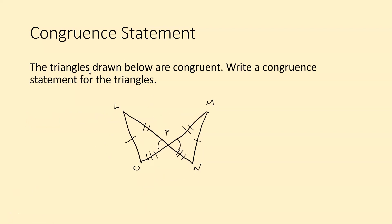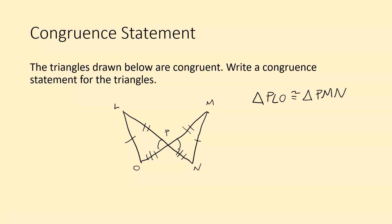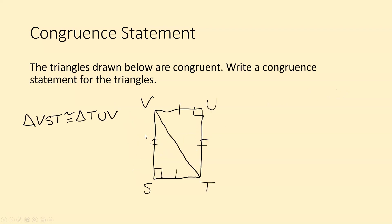Here we have two more congruent triangles — write a congruent statement. I'll start with triangle PLO. Since P corresponds to itself in these two triangles, and L corresponds to M, and O corresponds to N, the statement is: triangle PLO is congruent to triangle PMN. Keep in mind that these triangles may be rotated, so you need to think carefully about which points correspond to each other. For example, in the previous problem the triangles were rotated, so tracing the path of tick marks helps identify the correct correspondence.